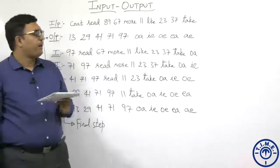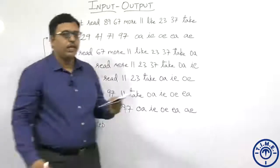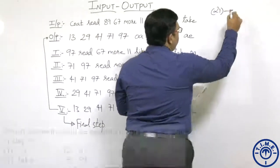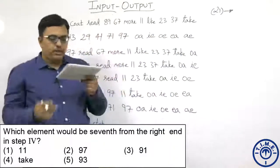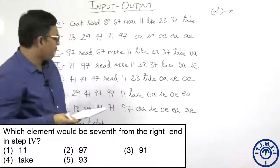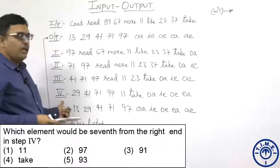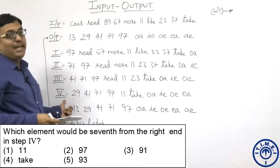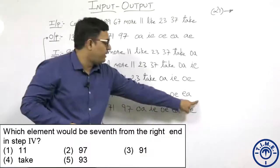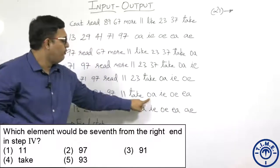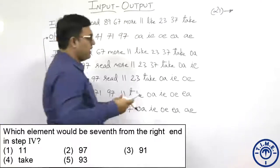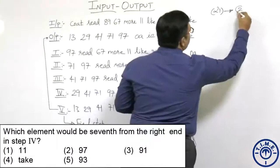Now let us see the 5 questions for this input. Question 21: which element would be 7th from the right end in step 4? Step 4 is here. Counting from the right end: 1, 2, 3, 4, 5, 6, 7. The 7th element is 97, and it is given in option number 2.